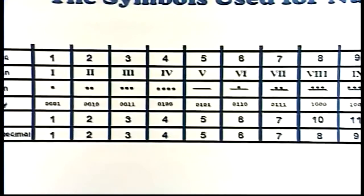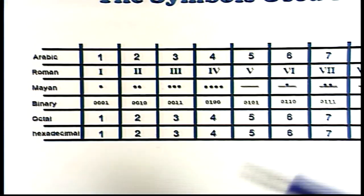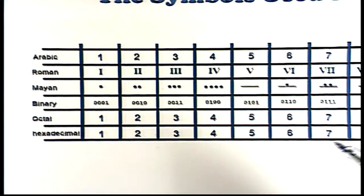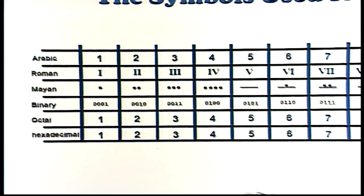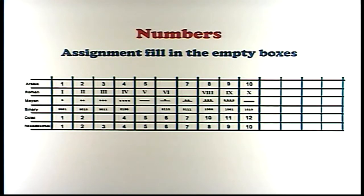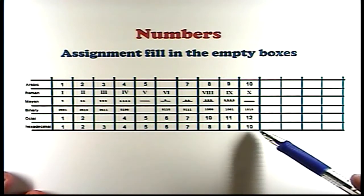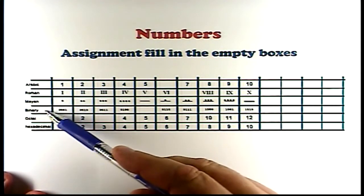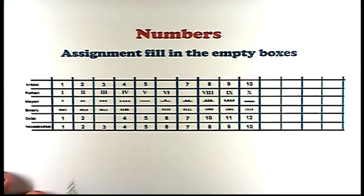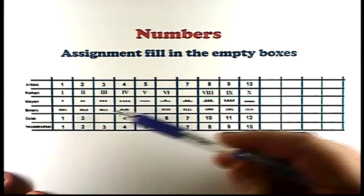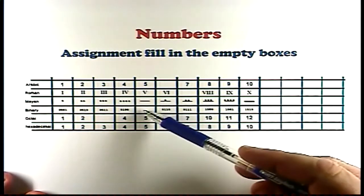So I really think it's important right here from the get-go to get an understanding of these different number symbols and systems. Because you're going to be exposed to these. Maybe not the Mayans so much, but you will be exposed to the Arabic and the Roman. And if you are in the computer age like we are, you're going to be exposed to the binary, the octal, and the hexadecimal. So I want to give you an assignment until next time. Right here we have our numbers grid with the Arabic, the Roman, the Mayan, the binary, the octal, and the hexadecimal. And I want you to draw a grid.